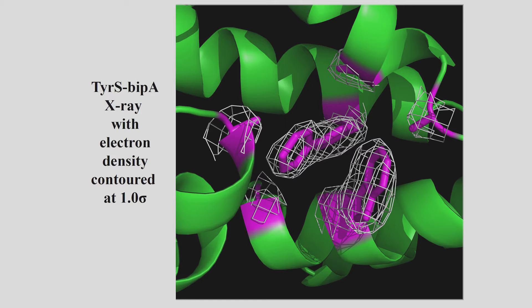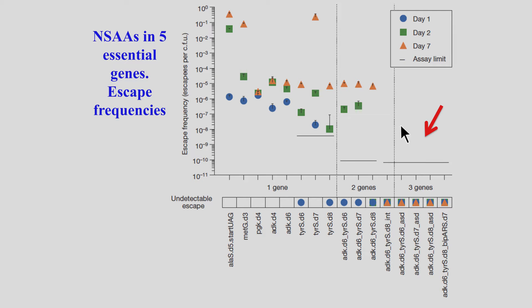Here's the crystallography of one of the half-dozen essential genes we engineered. You can see a leucine residue changed into BIPA — you can see these two phenyl groups. The electron density crystal structure shows the BIPA is as we modeled it. More importantly, we did this in a number of different genes and looked at escape rate. To be truly dependent upon the amino acid, there can be no escape at any reasonable population. Once we get to three essential genes simultaneously, we could not detect any escapes — less than one per trillion, essentially zero detected per trillion so far.